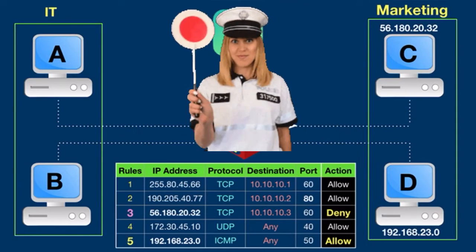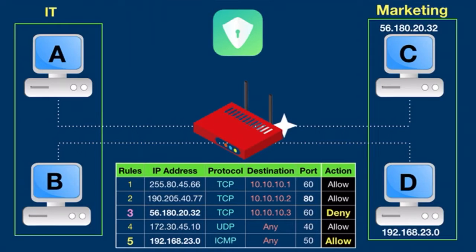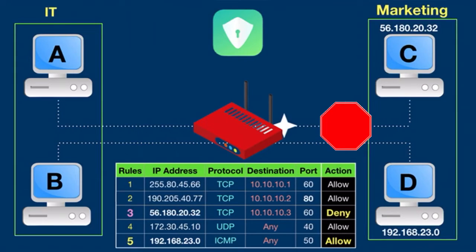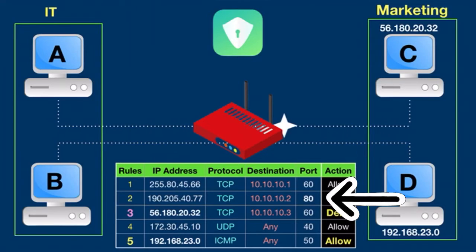With ACL you can filter traffic for a single IP address, group of IP addresses, different protocols, port numbers, keywords, and so on. For example, instead of blocking only one host in the marketing network, you can deny access to the entire network and allow only one device. If the manager from host C needs to access a web server located in the IT network, you can only allow port 80 and block everything else.